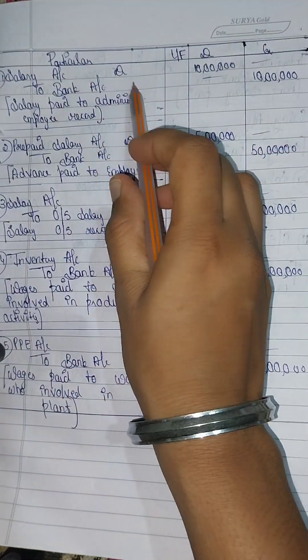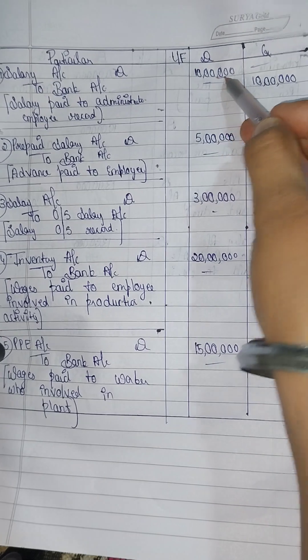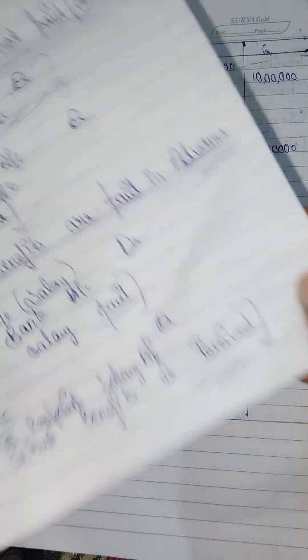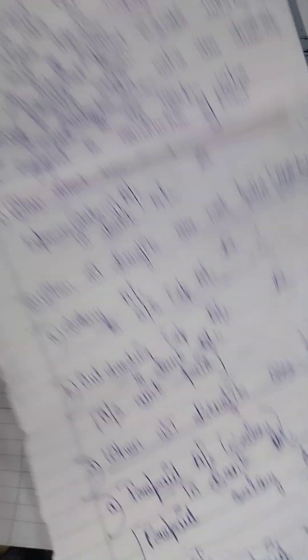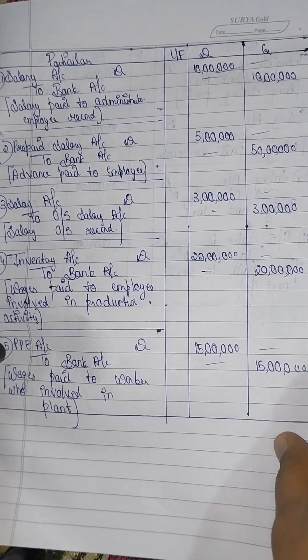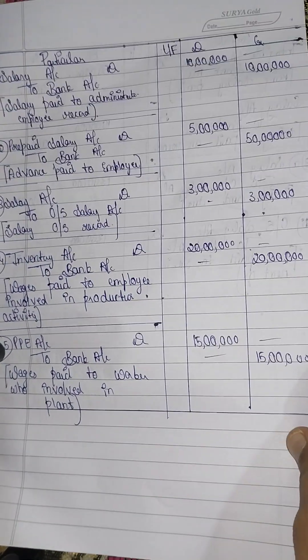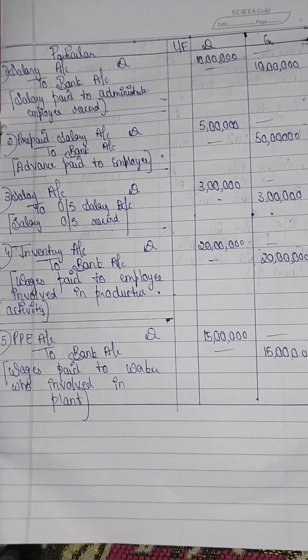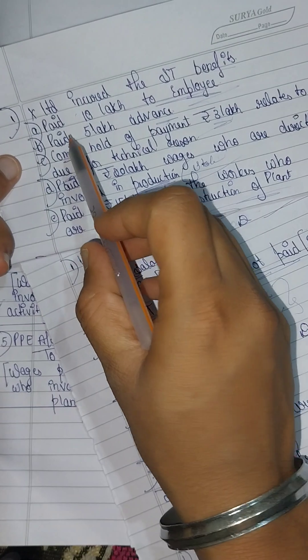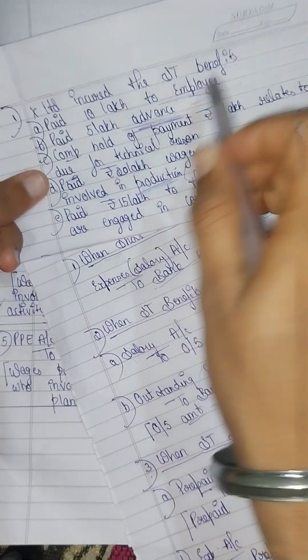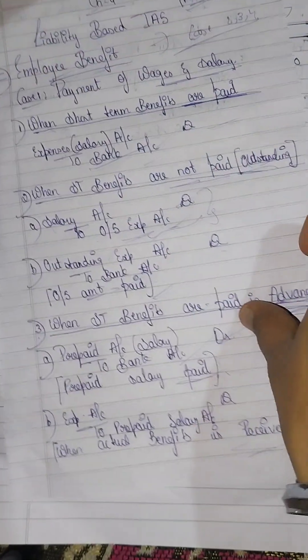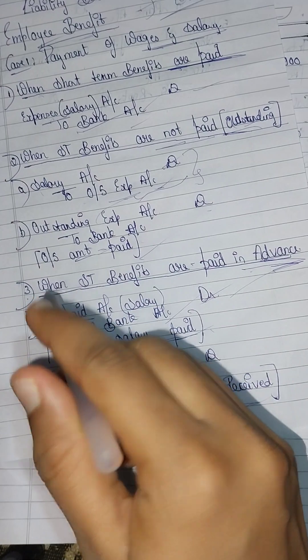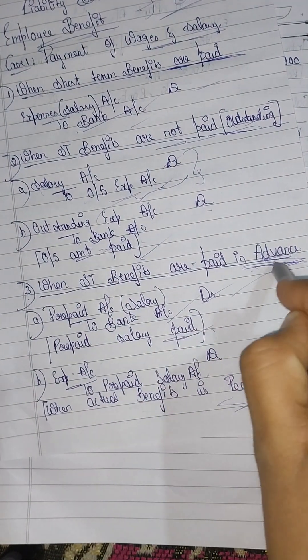Salary account debit to bank account — that is the same entry. The narration is based on the question. The salary paid to administration employees is recorded. Next one is paid 5 lakhs in advance. Advance is paid, so short-term benefits paid in advance.